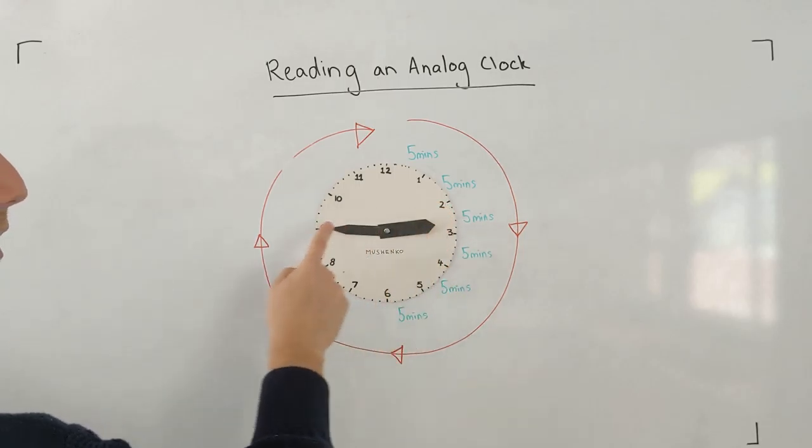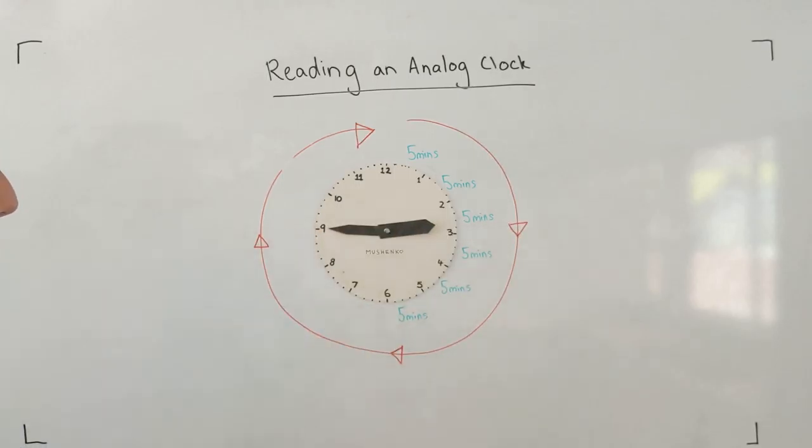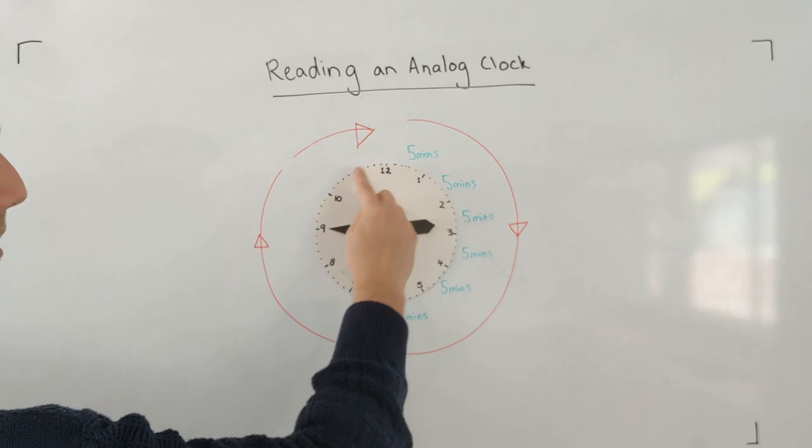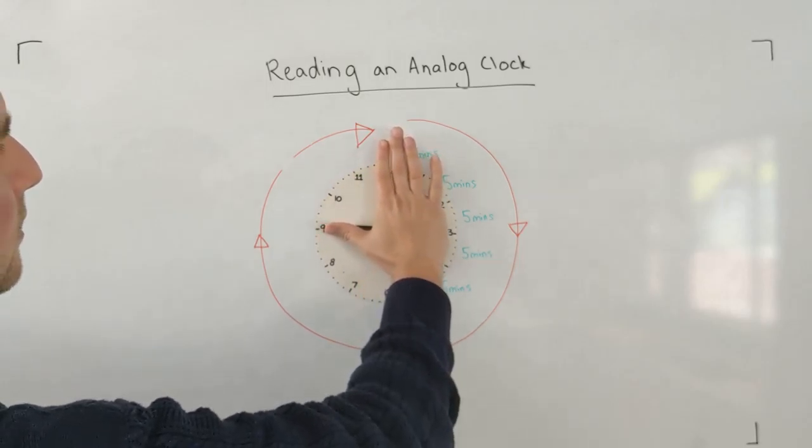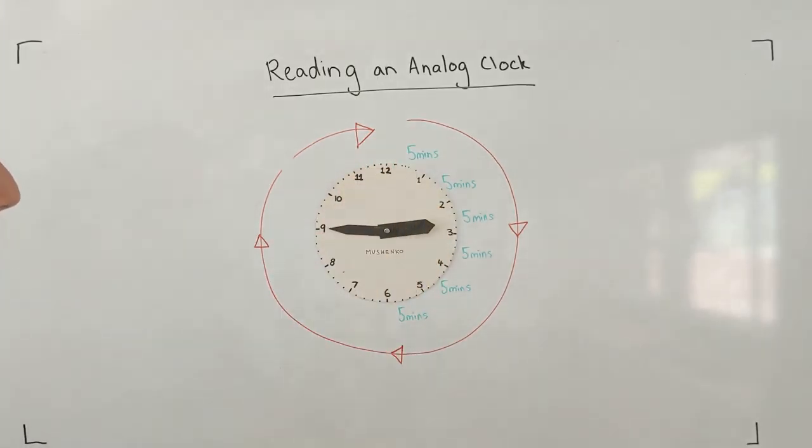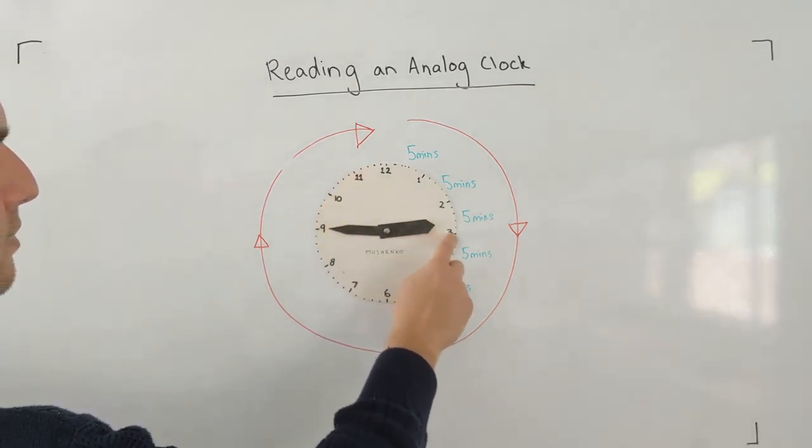So it's telling us 2:45. I can also see that, well, there's only one quarter of the clock left there. And I know that one quarter of an hour is 15 minutes. So it's one quarter to three o'clock.